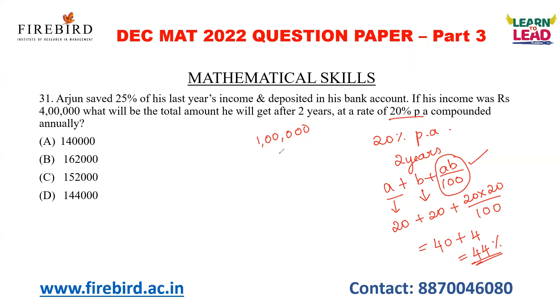Arjun deposited 1 lakh. What is 44% of 1 lakh? That is 44,000. So 1 lakh 44,000 is what Arjun will get at the end of two years.